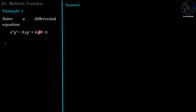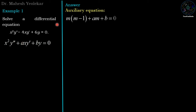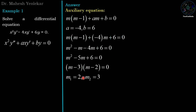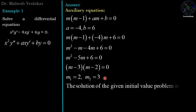Example 1: x squared y double dash minus 4xy dash plus 6y equal to zero. It is a Euler-Cauchy equation. We generate the auxiliary equation of the form m(m minus 1) plus am plus b equal to zero. Here a equal to minus 4 and b equal to 6. Substituting and simplifying gives the quadratic equation m squared minus 5m plus 6 equal to zero. Factorizing: (m minus 3)(m minus 2) equal to zero. So we have two distinct roots m1 equal to 2 and m2 equal to 3. Therefore the general solution is y equal to c1 x squared plus c2 x cubed.